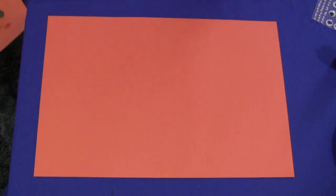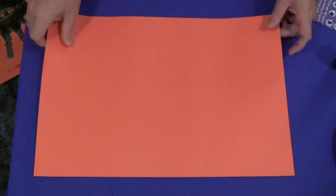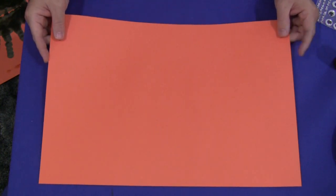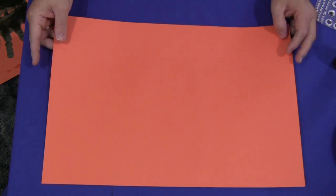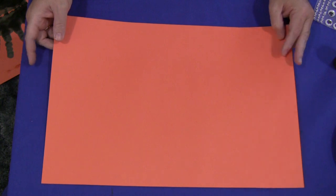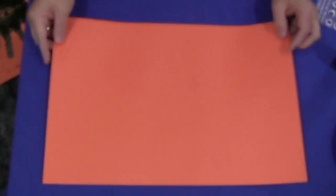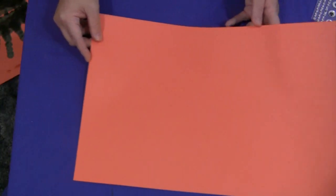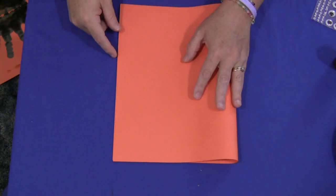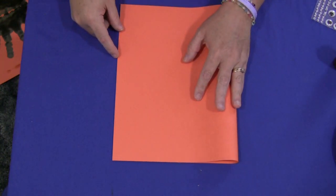To start this project you would need to take orange construction paper and we use the large sheet because you can put more paint on and the spider will be bigger. But you can certainly use the normal regular size construction paper if you don't have large sheets. So you just fold it in half.